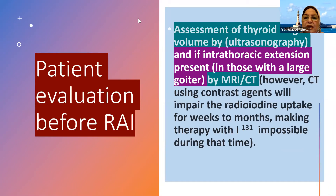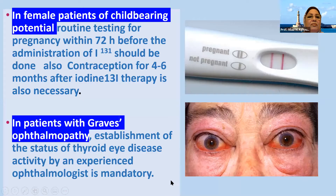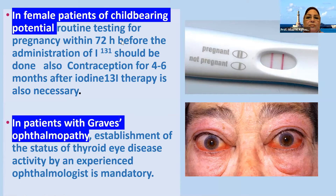In cases of intracervical extension due to the presence of a large goiter, MRI or CT is used, but CT using contrast agents will impair the radioiodine uptake for weeks to months, making therapy with radioactive iodine impossible during that time. In female patients in the childbearing period, routine pregnancy testing within 72 hours before administration is required. Contraception for four to six months after iodine therapy is also necessary. In patients with Graves' ophthalmopathy, establishment of thyroid eye disease activity by an experienced ophthalmologist is required.